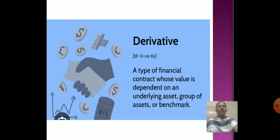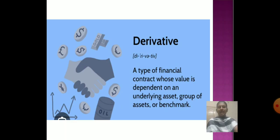Thank you. Unit 5 — Derivatives. What is a derivative? A derivative is a type of financial contract whose value depends on an underlying asset, group of assets, or benchmarks.